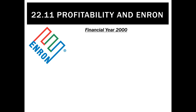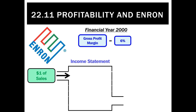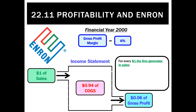Let's use the 2000 financial reports for Enron to calculate our profitability ratios. The first one is the gross profit margin. For Enron, that was only 6%, meaning for every dollar of sales, their cost of goods sold was $0.94. That's a really slim gross profit margin of $0.06 on every sales dollar, meaning they're not charging much markup on the goods they sell, and they've still got to cover other expenses like rent and insurance.